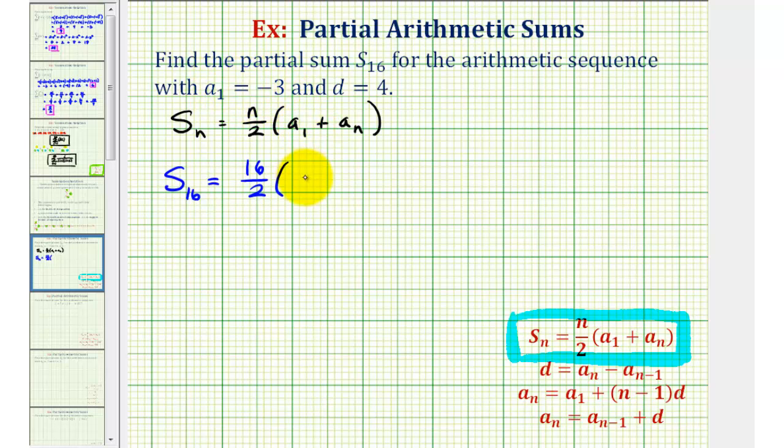Which we know is equal to negative three, plus A sub N, which would be the 16th term, which we weren't given. So let's go ahead and find A sub 16.